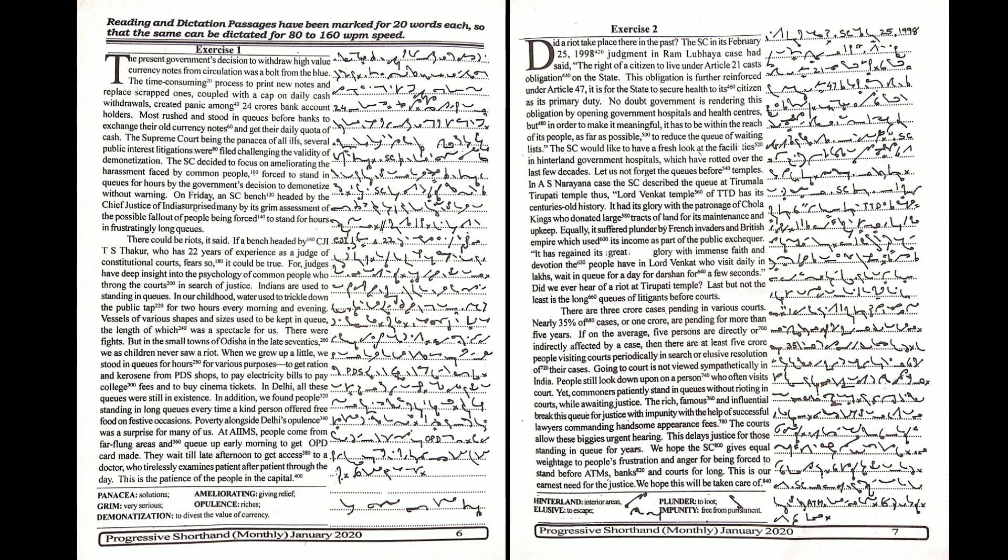Last but not the least is the long queues of litigants before courts. There are 3 crore cases pending in various courts. Nearly 35% of cases or 1 crore are pending for more than 5 years. If, on the average, 5 persons are directly or indirectly affected by a case, then there are at least 5 crore people visiting courts periodically in search of elusive resolution of their cases.